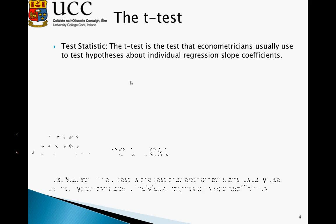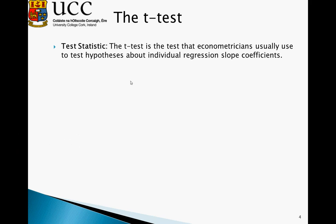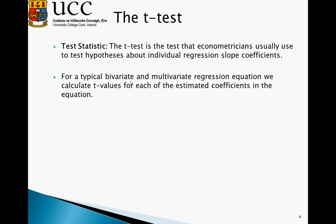The test statistic is essentially what econometricians usually use to test the hypothesis about an individual regression slope coefficient. For a typical bivariate or multivariate regression equation, we calculate t-values from each of the estimated coefficients in the equation. So we generally test each and every slope coefficient which we estimate to see whether it's statistically significant or not.